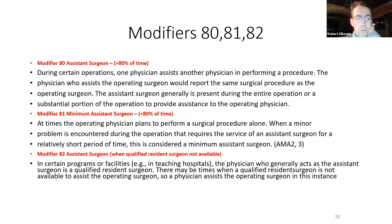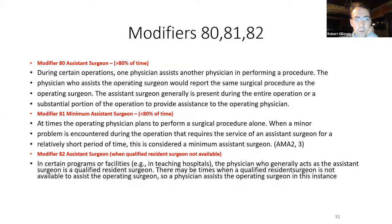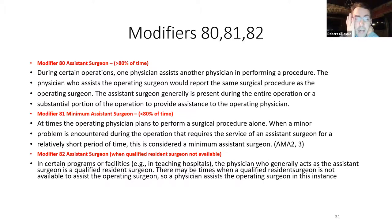Modifiers 80, 81, and 82 relate to when another surgeon is assisting. Modifier 80 is used when you do a procedure together with a colleague. Modifier 81 is used when another surgeon comes in to help for a short amount of time in an urgent situation. Modifier 82 applies when there is no qualified resident available, similar to using an assist for a nurse practitioner or APP. Our coders have told us to use modifier 80 even in the setting of no resident available.